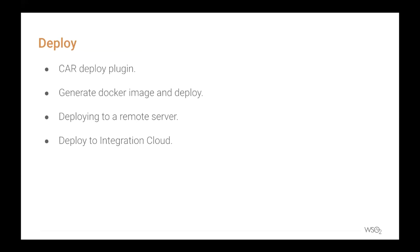After developing and testing your integration scenario, it's time to deploy. Integration Studio has four inbuilt mechanisms: you can use the CAR deployer plugin, generate a Docker image and deploy it, deploy into a remote server, or deploy to the integration cloud. However, in today's webinar we'll not be showing the inbuilt deployment capabilities of Integration Studio, but rather we'll show you how to deploy your application using a Jenkins pipeline to a VM and a Kubernetes environment.